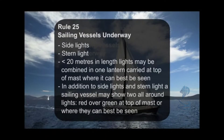Rule 25, Sailing Vessels Underway: side lights, stern light. On a sailing vessel less than 20 meters in length overall, the lights may be combined in one lantern carried at the top of the mast where it can best be seen. In addition to side lights and a stern light, a sailing vessel may show two all-around lights, red over green, at the top of the mast or where they can best be seen.